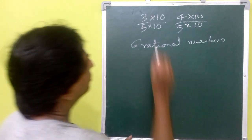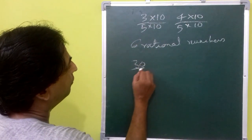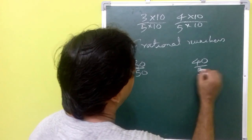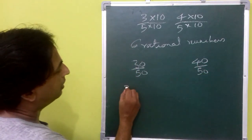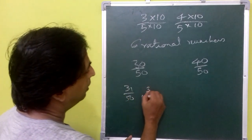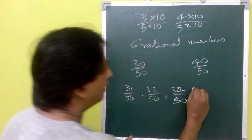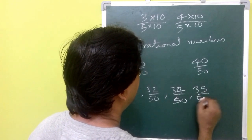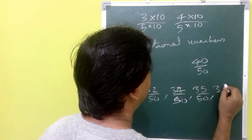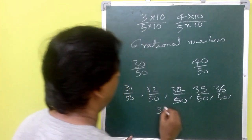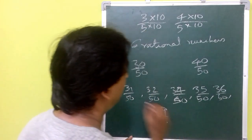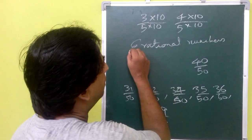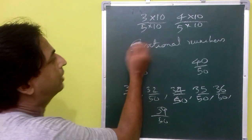Multiplying by ten and dividing by ten, you get 30/50 and 40/50. In between you can find 31/50, 32/50, and so on up to 36/50 and 39/50, giving you six rational numbers. The key point is to multiply by a number greater than six.